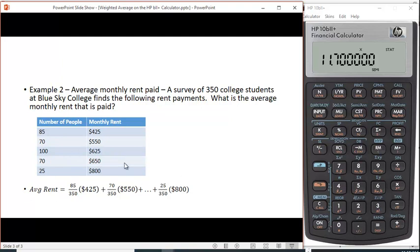To do this calculation manually is a little more tedious. You actually have to add up all these numbers, which we said was 350, and to get the weight for the first group of people who paid $425, you'd have to take 85 and divide it by 350 and multiply it by the 425. And then you take the 70 divided by 350 and multiply it by 550, et cetera, and you do it for all of these observations.